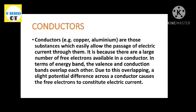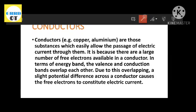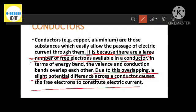Conductors — examples include copper, aluminum, iron, and gold. Conductors are those substances which easily allow the passage of electric current through them. This is because there are a large number of free electrons available in the conductor. In terms of the energy band, the valence band and conduction band overlap each other.